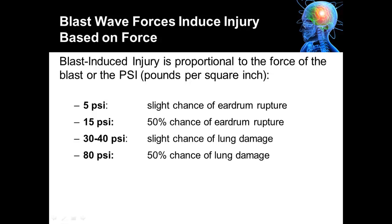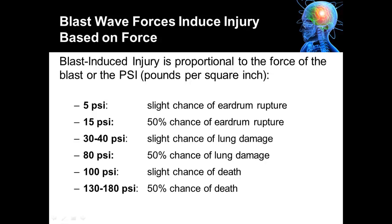At eighty PSI there's a fifty percent chance of lung damage. Moving up to a hundred PSI there's a slight chance of death. Around one hundred thirty to one hundred eighty PSI there's a fifty percent chance of death. And once you reach two hundred to two hundred fifty PSI, death is usual.